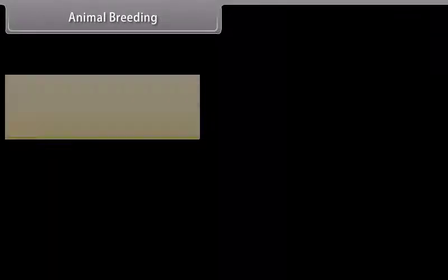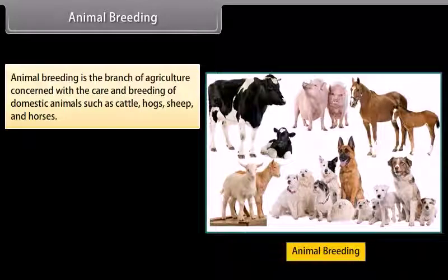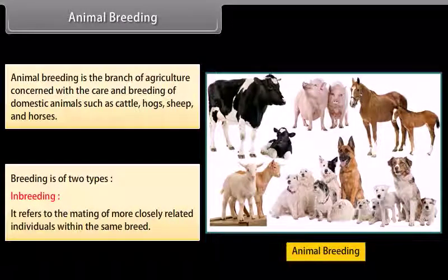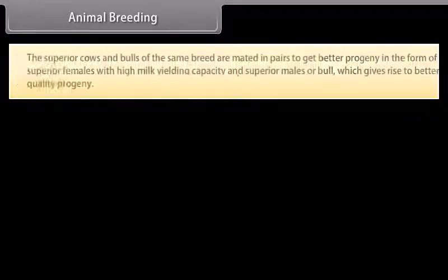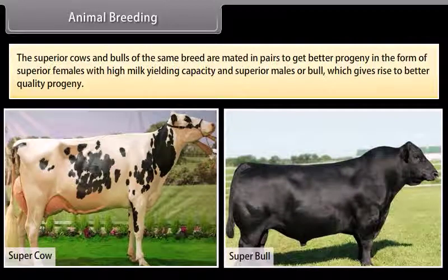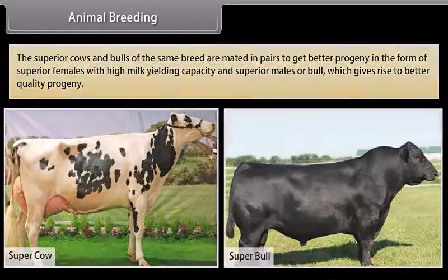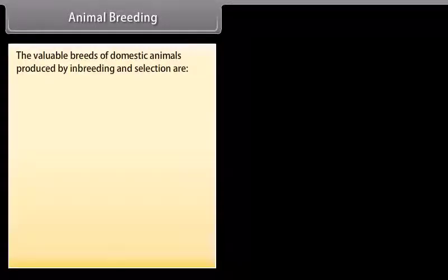Animal breeding is the branch of agriculture concerned with the care and breeding of domestic animals such as cattle, hogs, sheep, and horses. Breeding is of two types. Inbreeding refers to the mating of more closely related individuals within the same breed. The superior cows and bulls of the same breed are mated in pairs to get better progeny in the form of superior females with high milk yielding capacity and superior bulls which give rise to better quality progeny.